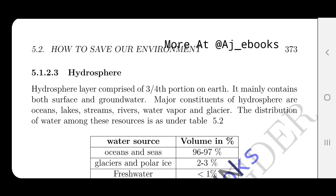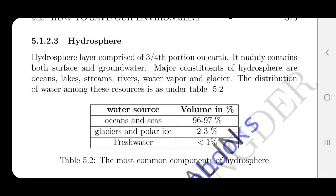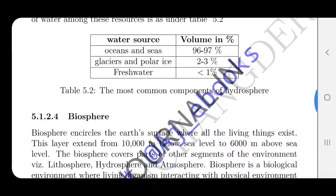The hydrosphere is composed of the three-fourths portion of the earth. It mainly contains both surface and groundwater. Major constituents of the hydrosphere are oceans, lakes, streams, rivers, water vapor and glaciers. Components of oceans and seas are 2–3%, and glaciers and polar ice are less than 1%.